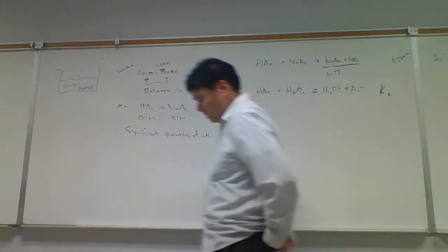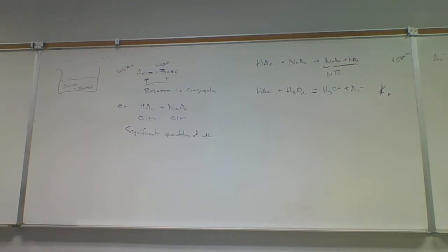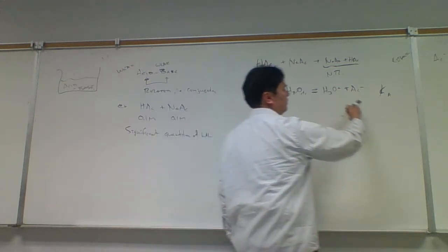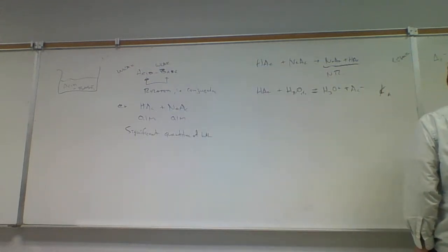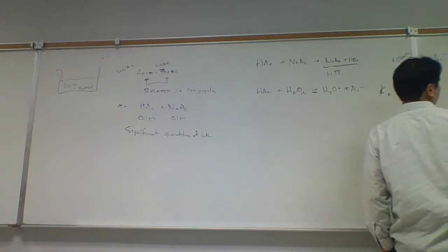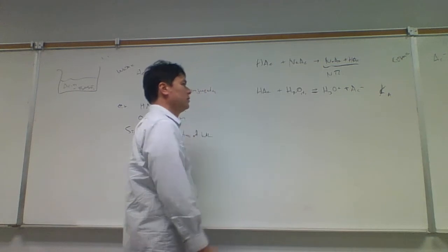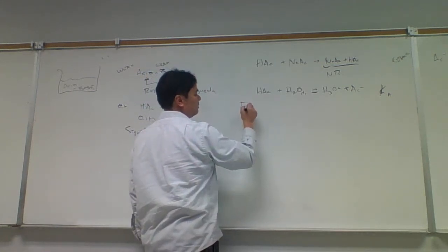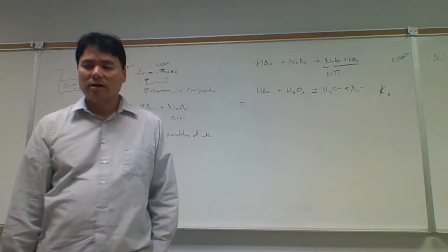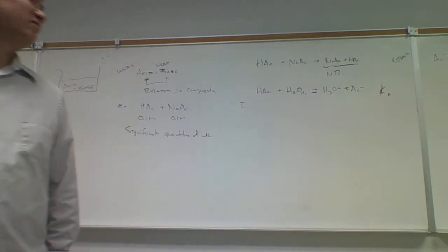Since we're interested in pH, what would be more direct? The Ka is in terms of hydronium, so that would give us the pH directly. The KB is in terms of hydroxide, so it would give us pOH, which would require an additional step to convert to pH. So it's better to use Ka because we go straight to pH, but it's not required — we could do KB as well.